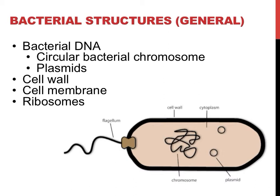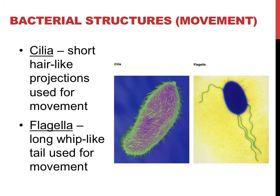Some bacteria contain other structures which will be described later, but those are the bare essentials. While some bacteria are incapable of movement on their own and are forced to eat food that comes their way, other bacteria are capable of movement. The two structures that allow bacteria to move from place to place are called cilia and flagella.